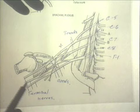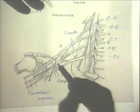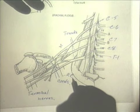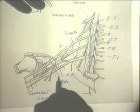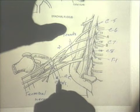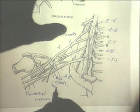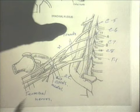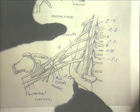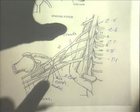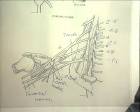As the divisions come together, they form a posterior cord going to the posterior musculature, a lateral cord, and a medial cord. These give rise to the terminal branches. The posterior cord goes to posterior musculature in the arm, and the lateral and medial cords go to the flexor or anterior compartment of the arm.